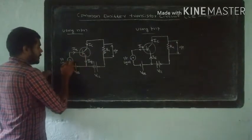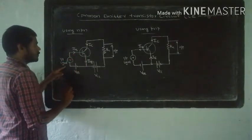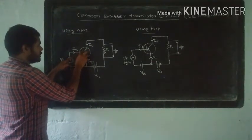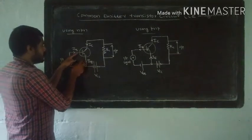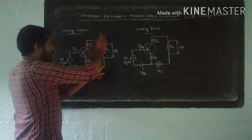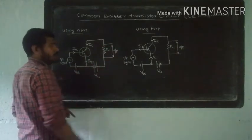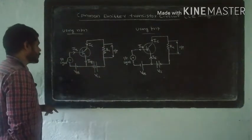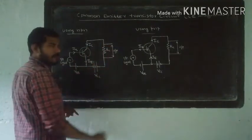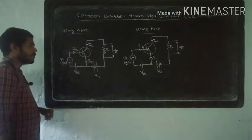In the common emitter configuration, the base is the input, emitter is the base and the signal input. The emitter is common, the collector is connected to resistor RC which is the output. This is the input signal, and the transistor performs amplification.